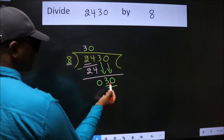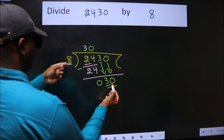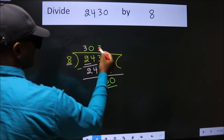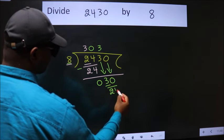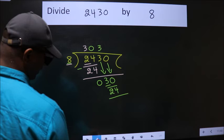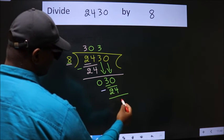A number close to 30 in 8 table is 8 threes, 24. Now we subtract. We get 6.